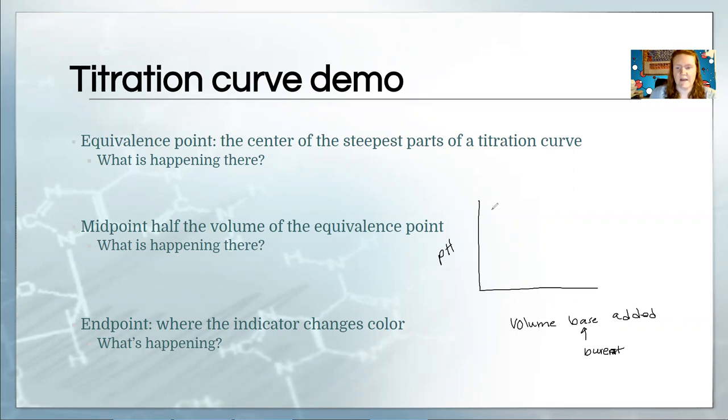So if you're titrating a weak acid with, say, NaOH, a strong base, you can use any strong base, NaOH is the cheapest, so that's typically what we use. Your pH is going to start out pretty low, say two or so, just as an estimate.